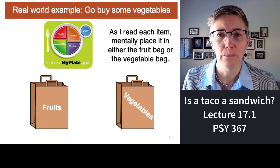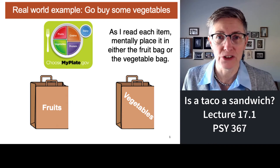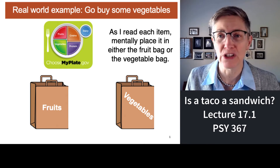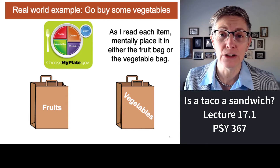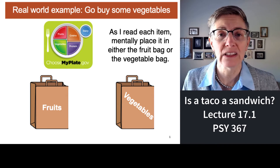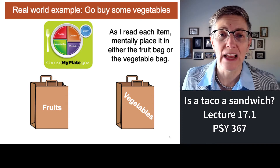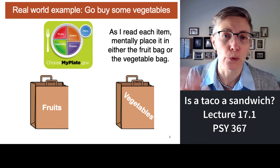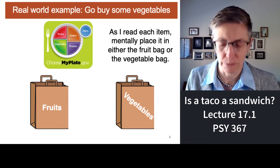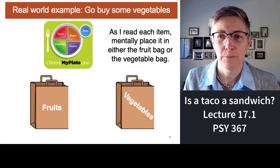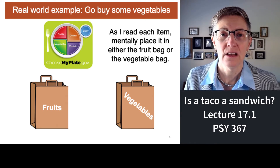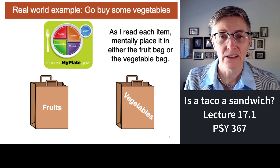Let's start with a really easy example. In the US, our government puts out recommendations for how much of each type of food category we should eat — that's called MyPlate, and you can see it here. Half of what we should eat is fruits and vegetables. As I say each of these words out loud, just categorize them as either a fruit or a vegetable. Apple, potato, banana, strawberry, celery, avocado, tomato, string bean, corn, eggplant, olive.